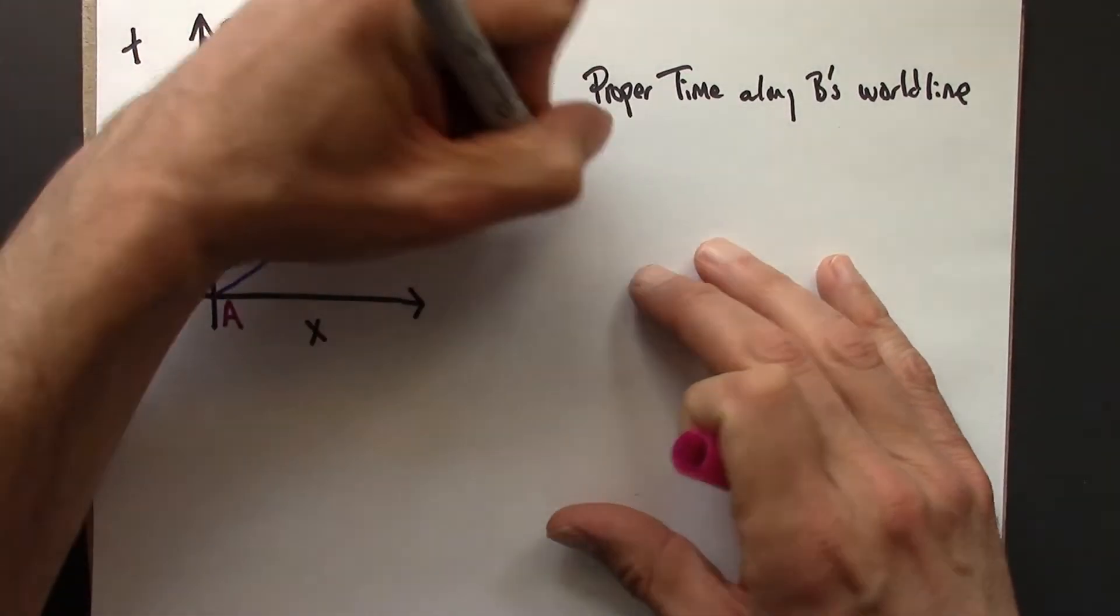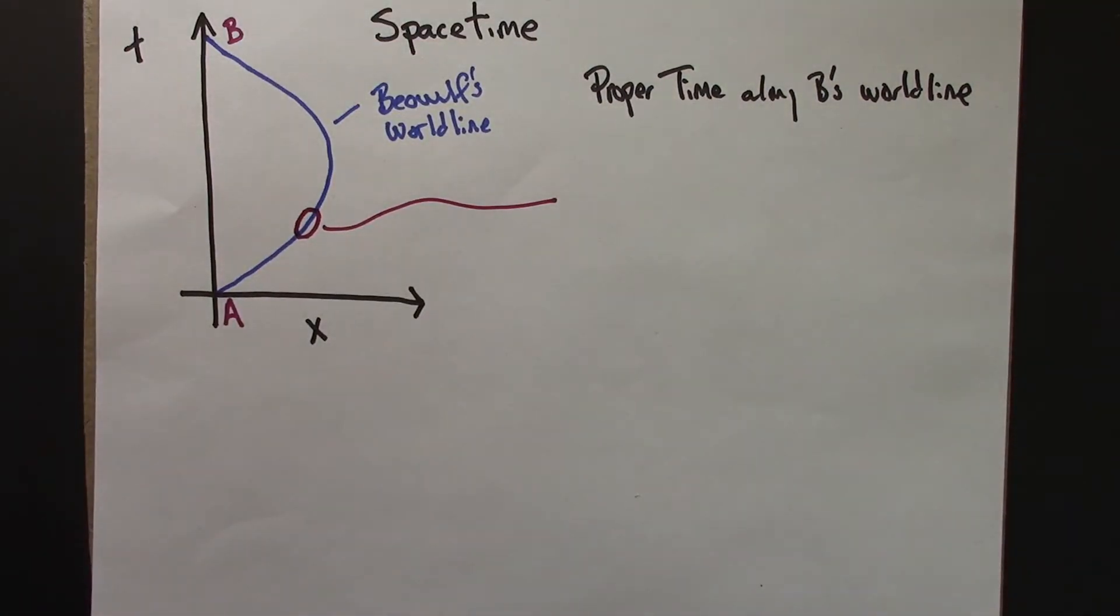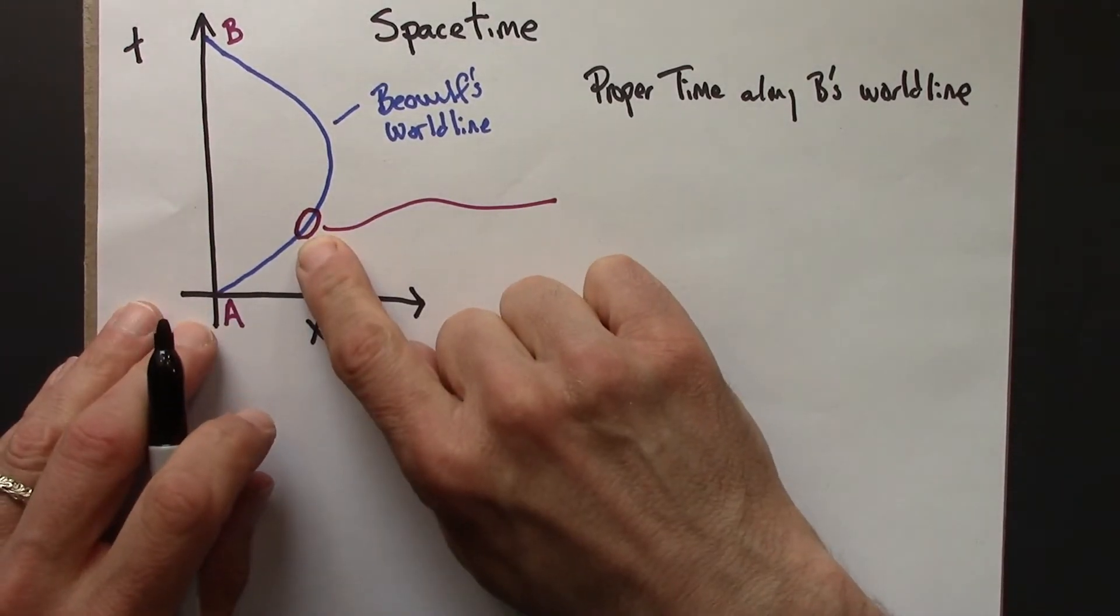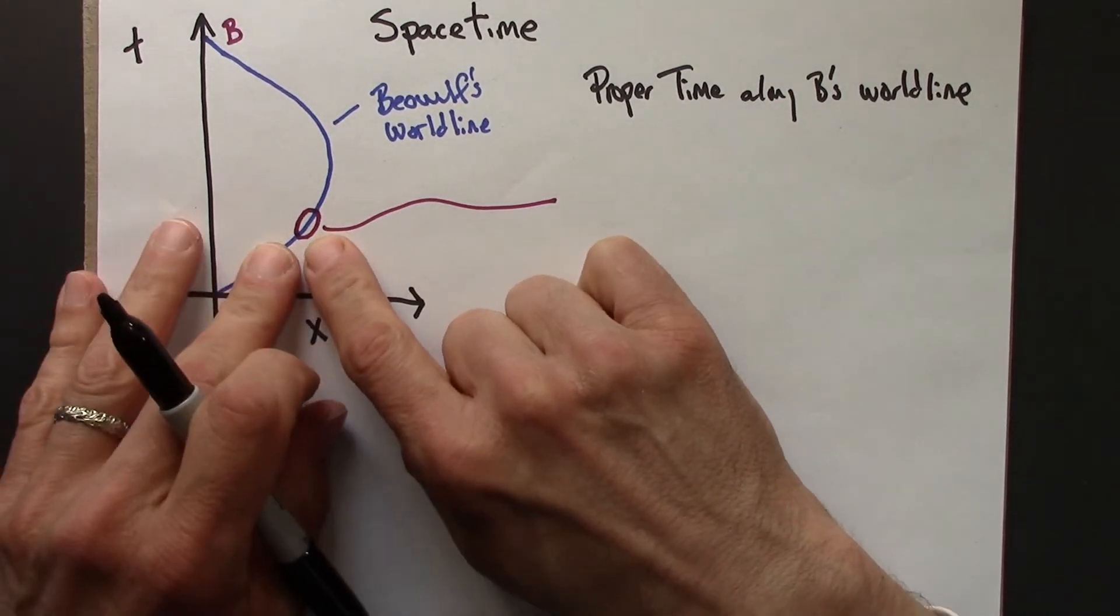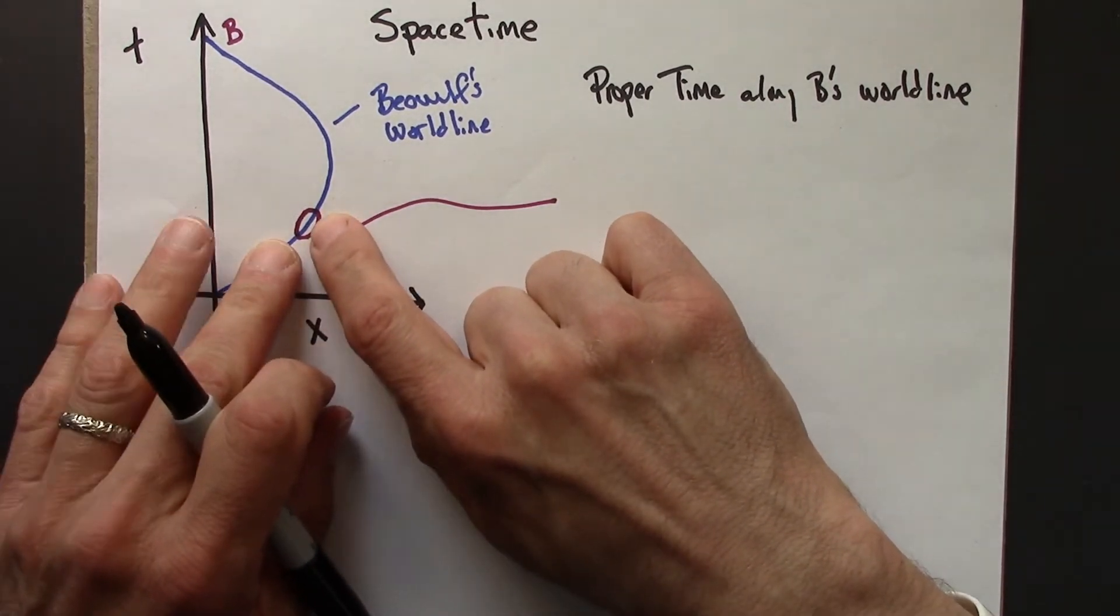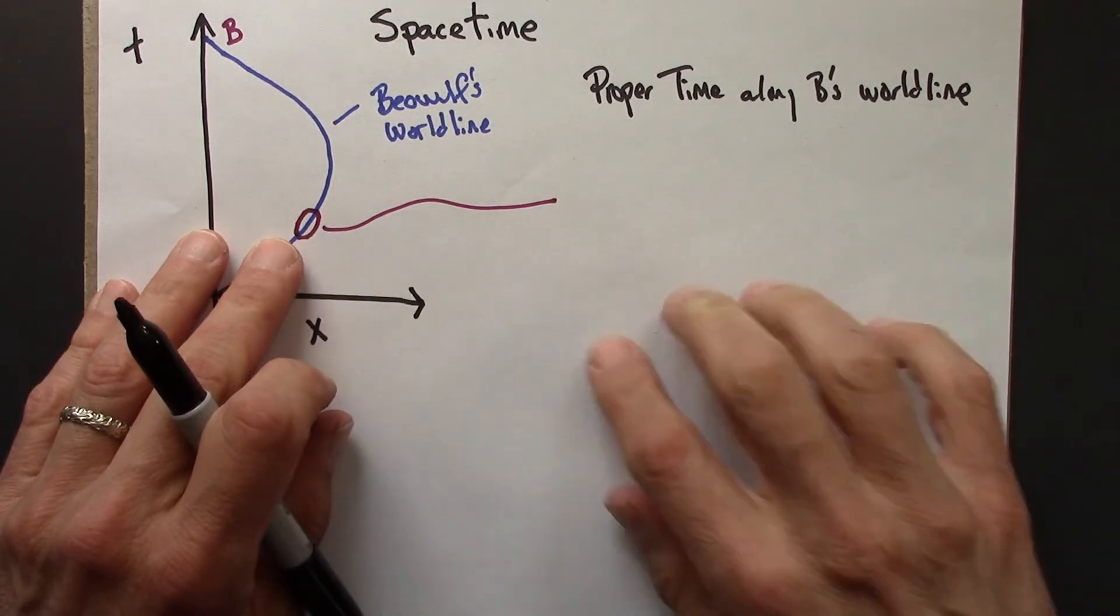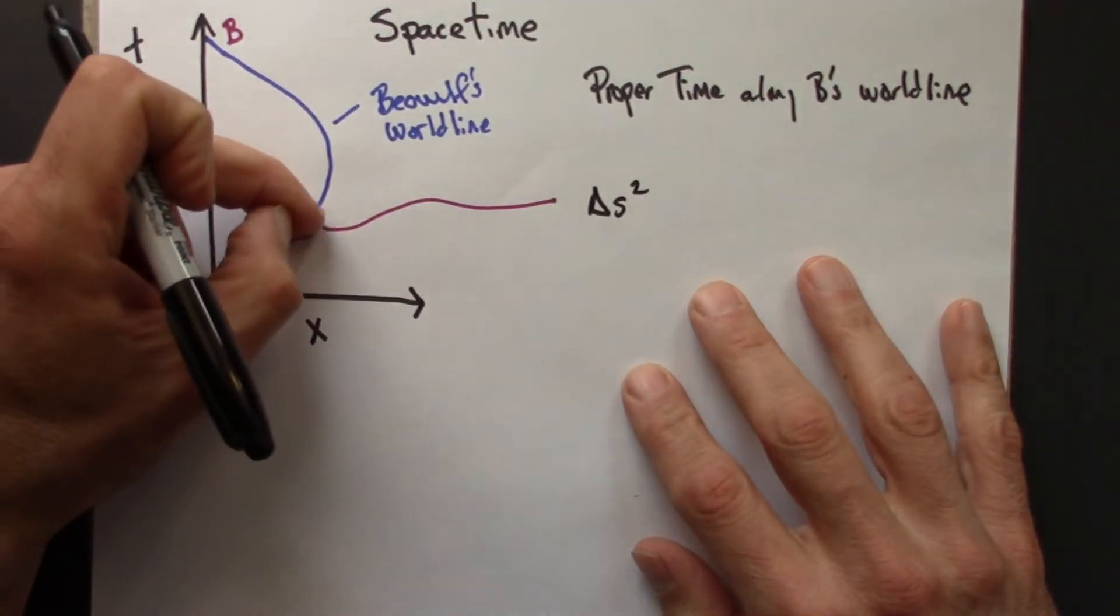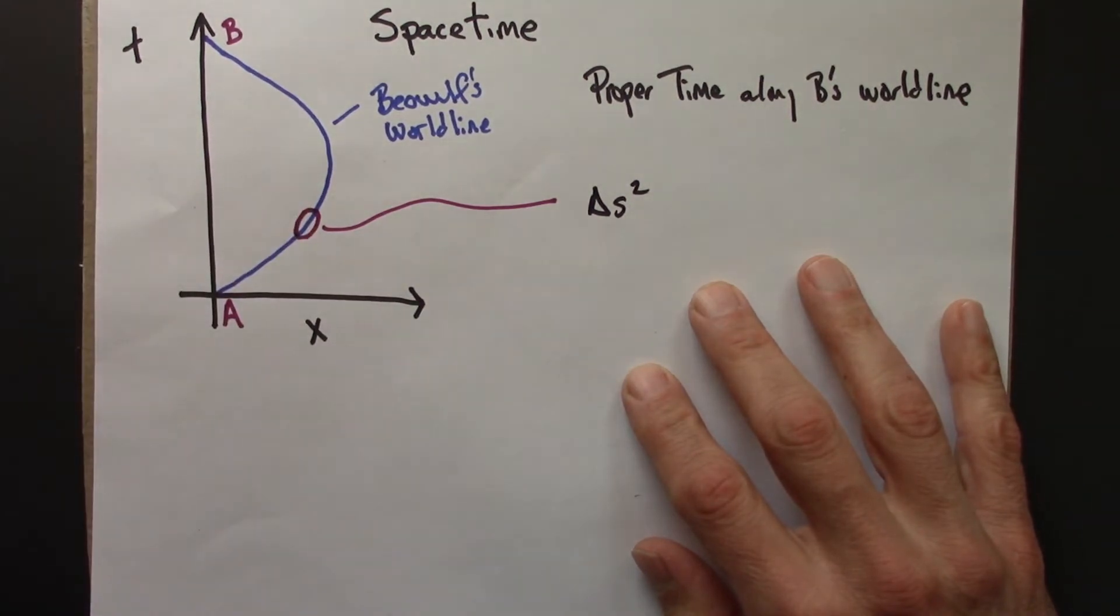I can use the metric equation for this little segment, because the velocity is almost constant here, because the line is almost straight.